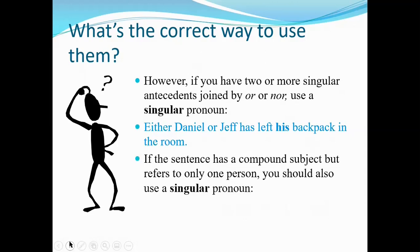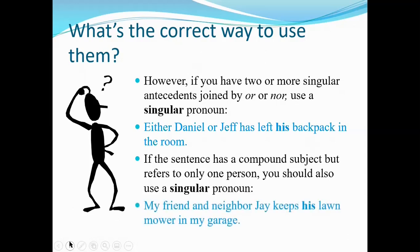If the sentence has a compound subject but refers to only one person — and this is a pretty rare thing — you should use a singular pronoun. For example: 'My friend and neighbor Jay keeps his lawnmower in my garage.' Jay is my friend and also my neighbor, so that's a compound subject, but it's still one person, therefore one singular pronoun.